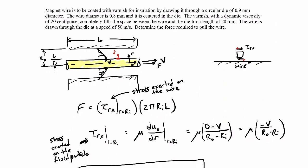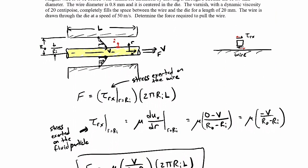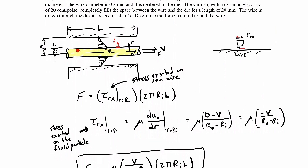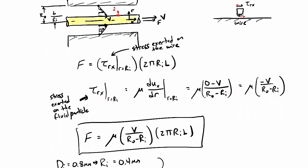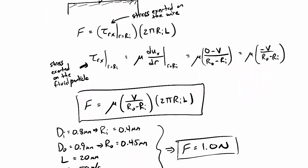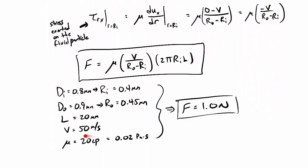To recap: we assumed a Couette velocity profile where the velocity gradient is constant. The shear stress on the wire surface is μ times du_x/dr. We found the velocity gradient from the constant slope of the linear profile — just the change in velocity over the change in radius. The force is that shear stress multiplied by the surface area 2π r_i L. We didn't need to integrate because the shear stress was uniform over the entire surface. Finally, we converted centipoise to pascal-seconds to get the numerical answer of 1 newton.